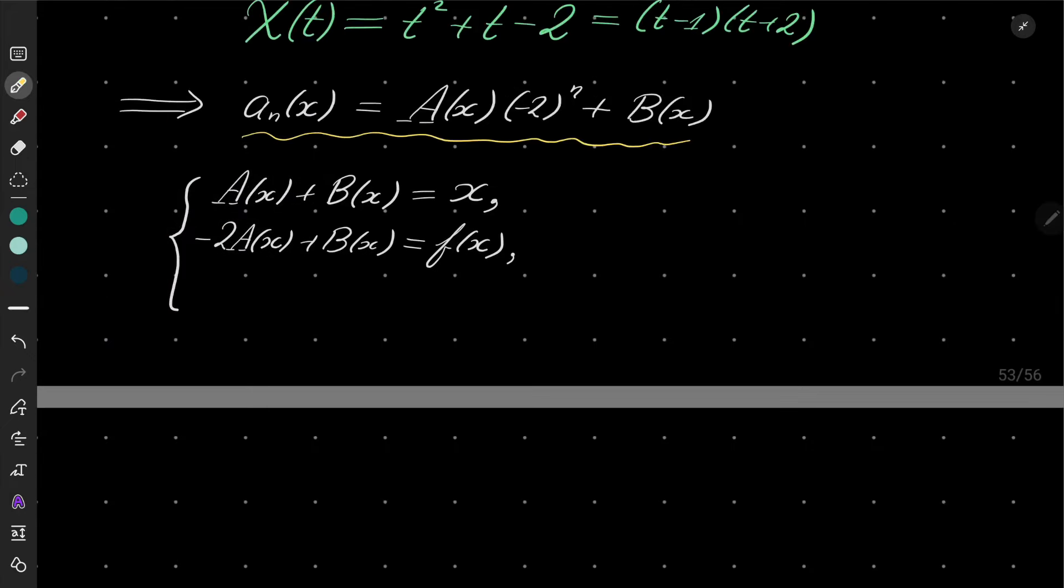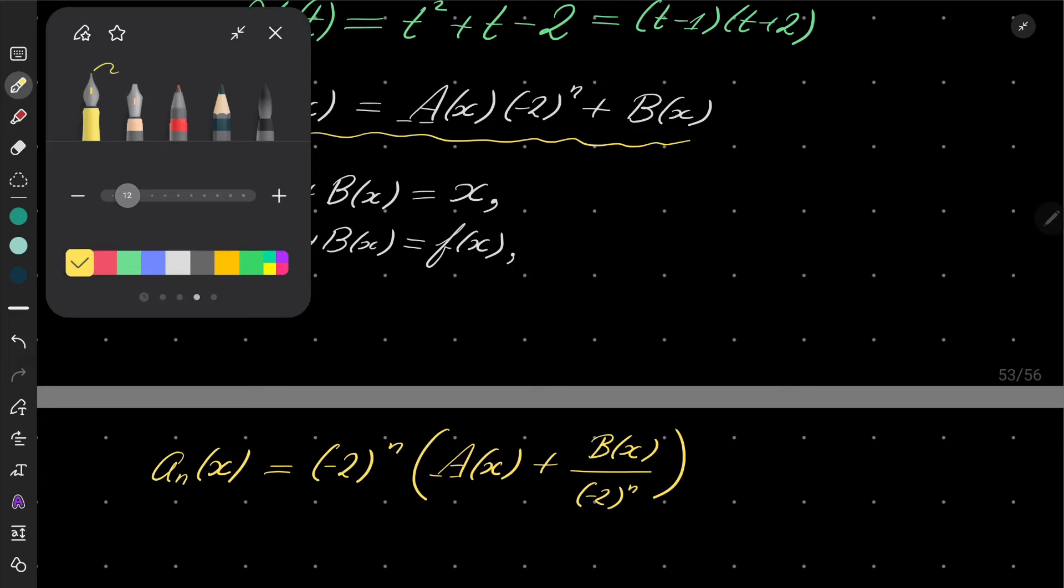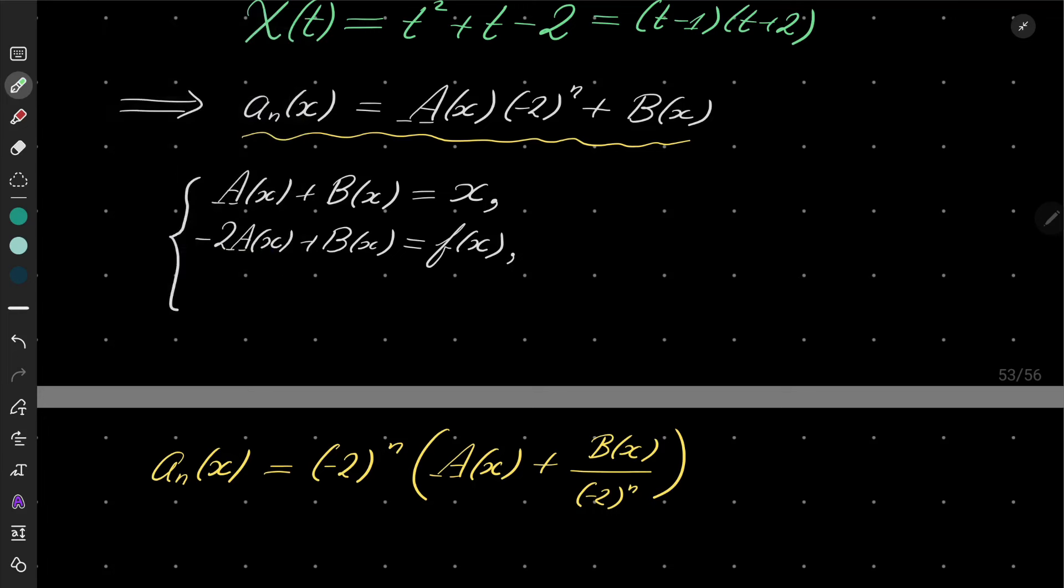Notice the following: the second part goes to zero as n goes to infinity. Now, can a(x) be non-zero? No, it can't. a(x) must be zero.